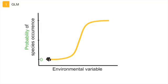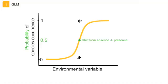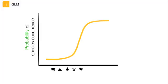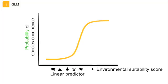So if all your species data points are absences, the probability of occurrence is zero, whereas if all your points are presences, the probability of occurrence is one. At the value of the environmental variable where absence changes into presence, the corresponding probability of occurrence is 0.5. This means that there is an equal number of occurrence points and absence points recorded at that value of the environmental variable. In a species distribution model, we are not looking at the effect of only one environmental variable, but at several different variables. In a generalized linear model, all predictors that you put into the model are combined in an overall score for the environmental suitability, the so-called linear predictor.